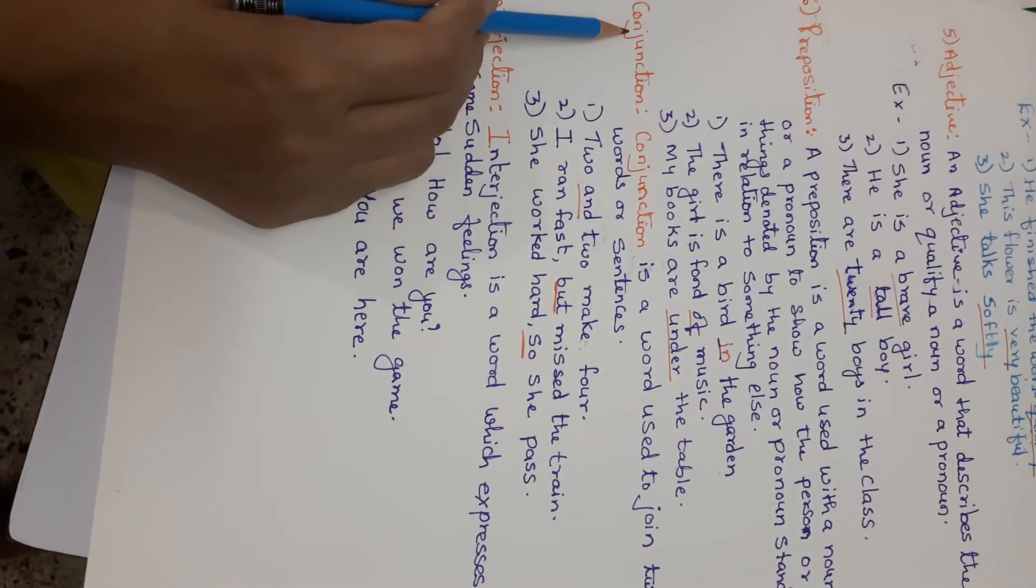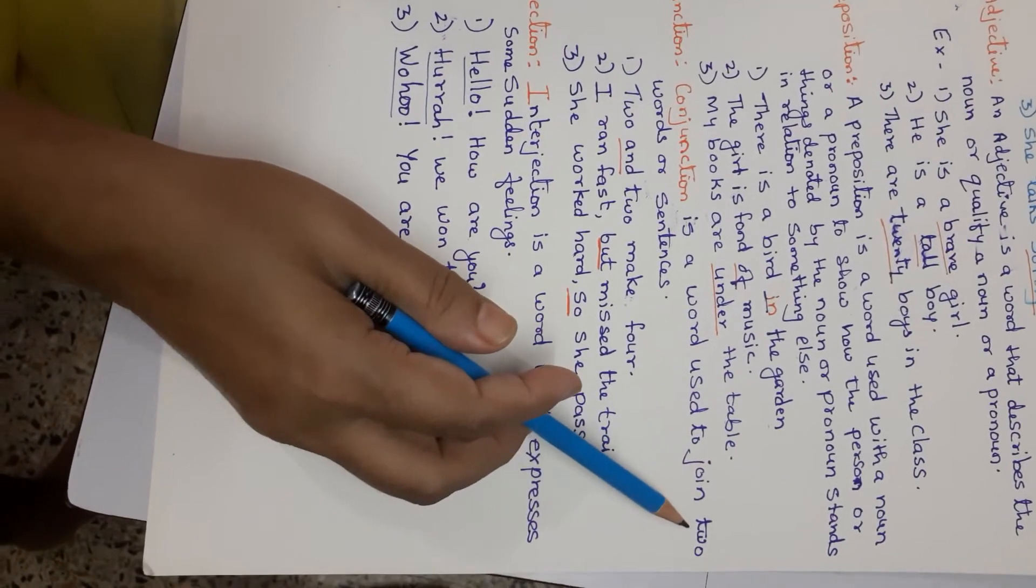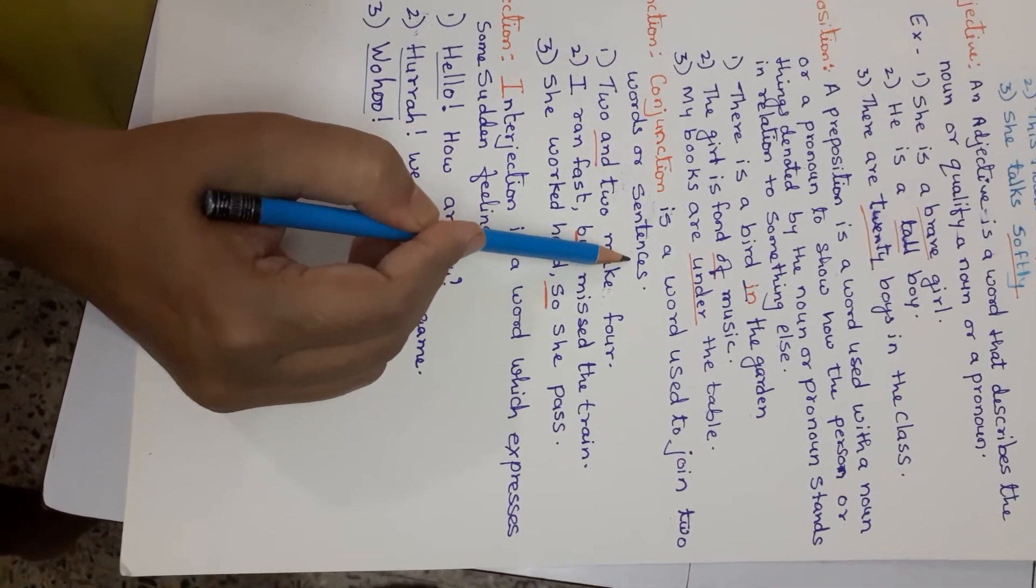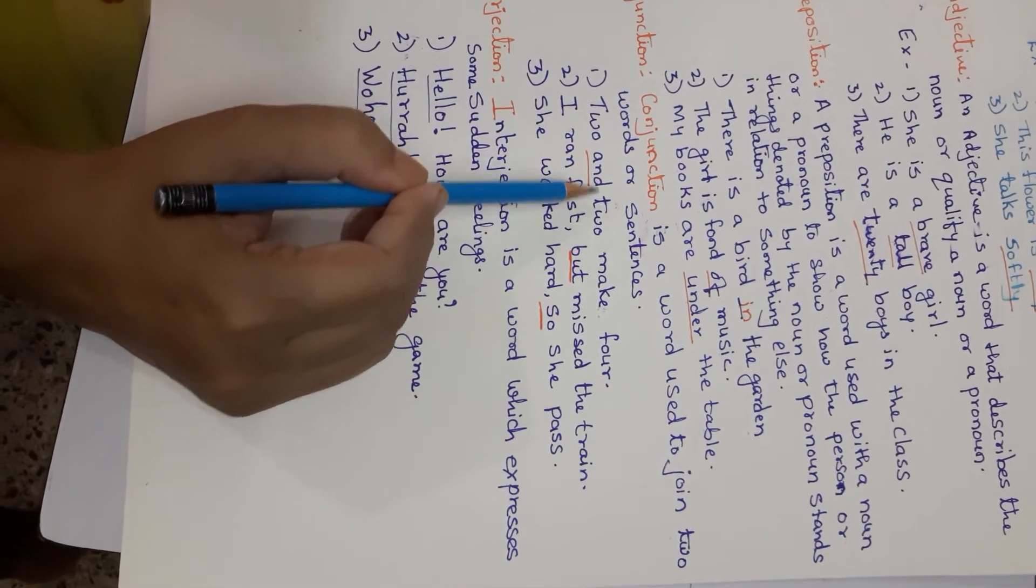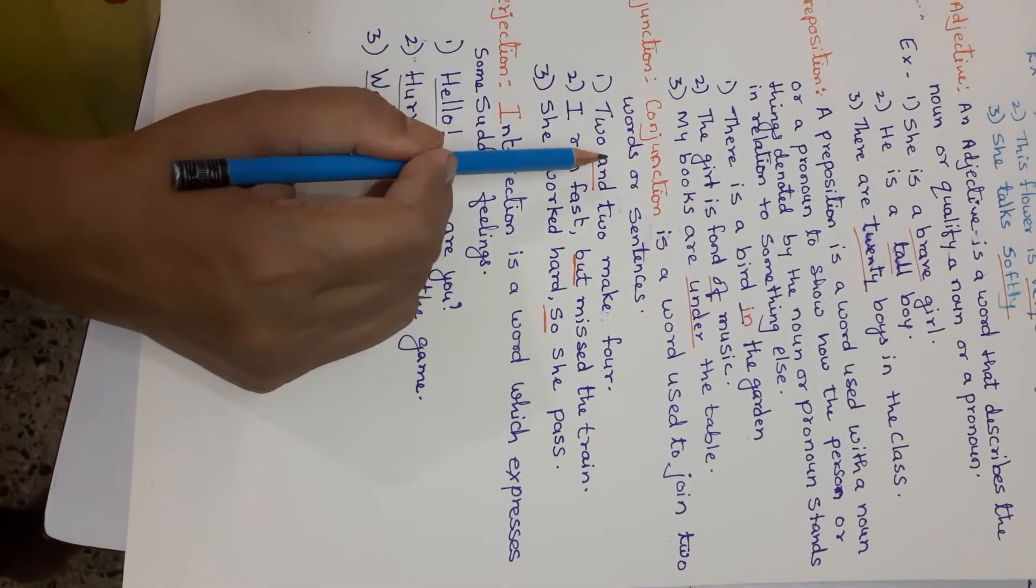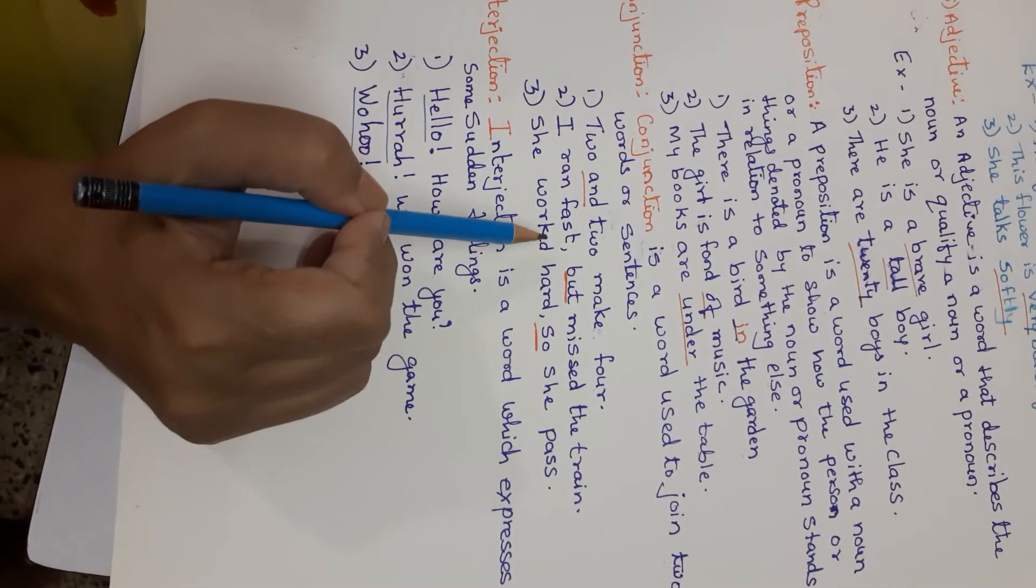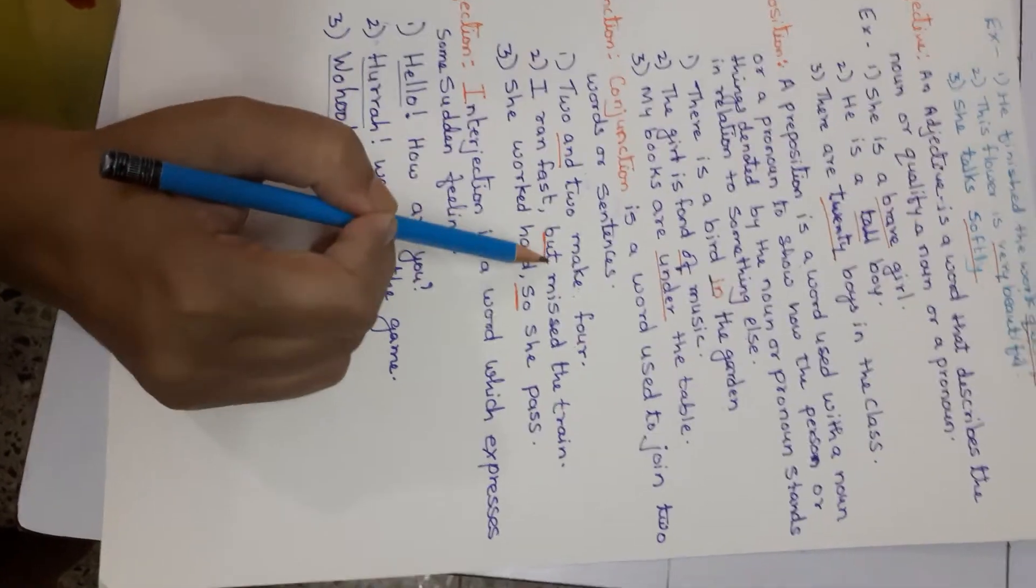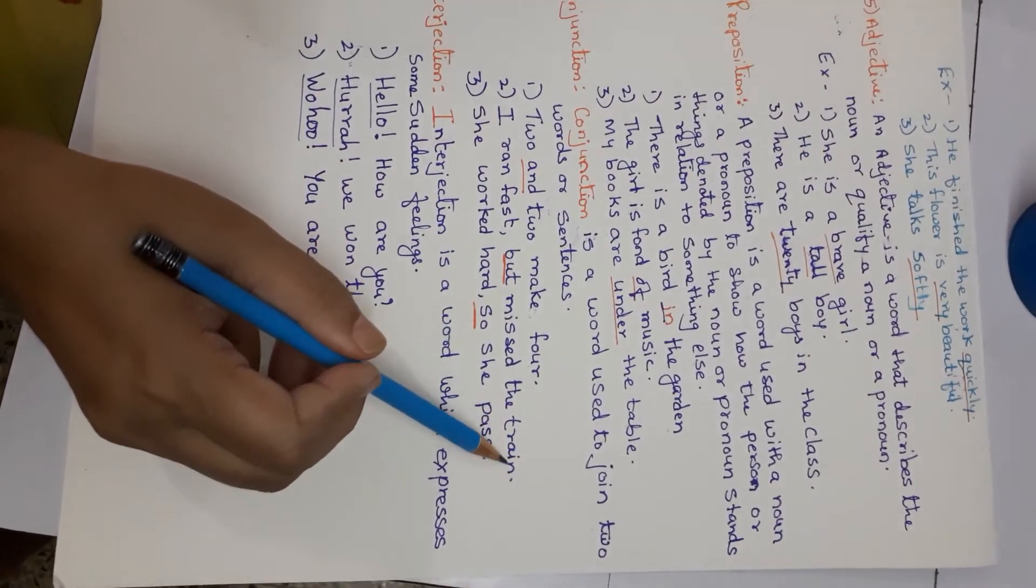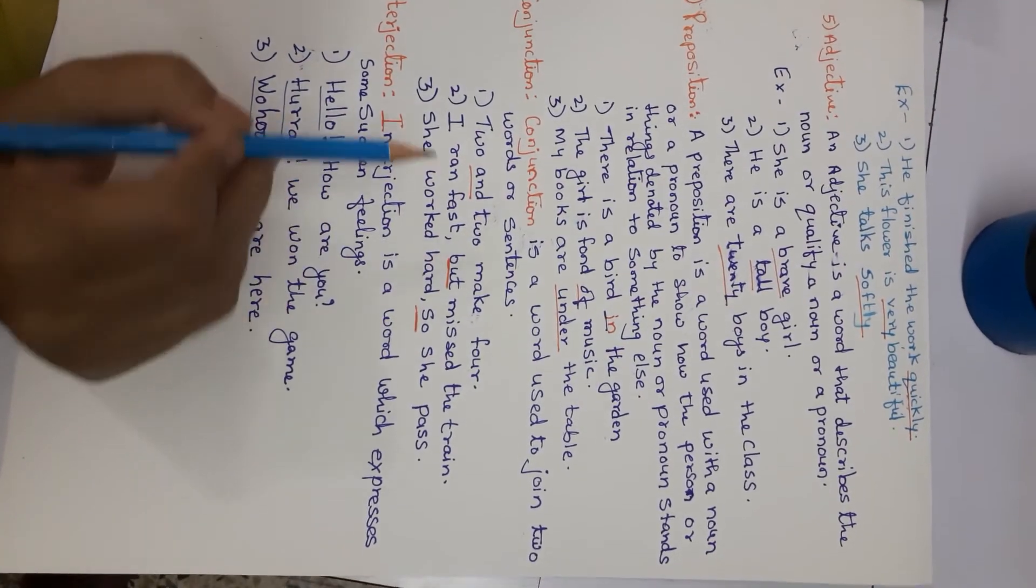Now conjunction. Conjunction is a word used to join two words or sentences. Two and two make four. And is a conjunction. I ran fast but missed the train. But. So this is conjunction.